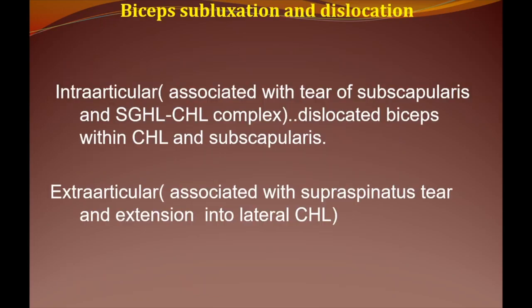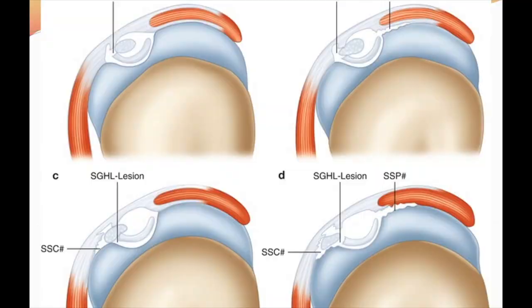When the biceps tendon can be manipulated out of its position as it enters the bicipital groove without passing over the greater or lesser tuberosity, it is called subluxation. On the other hand, if it passes completely over the greater or lesser tuberosity, that is called dislocation. This is the Habermeyer classification, categorizing the tear into four types.